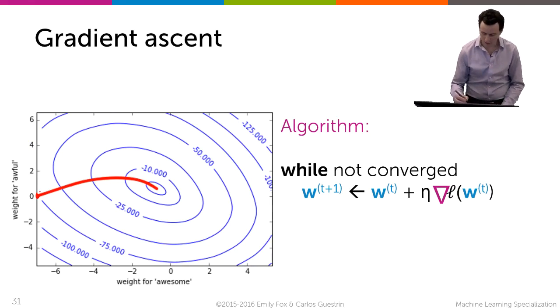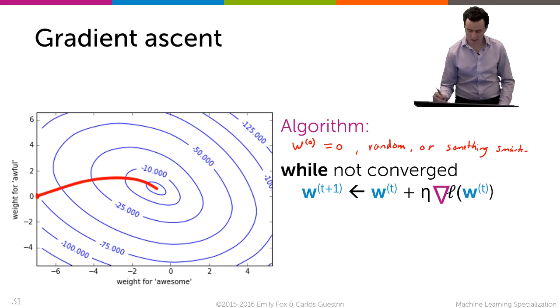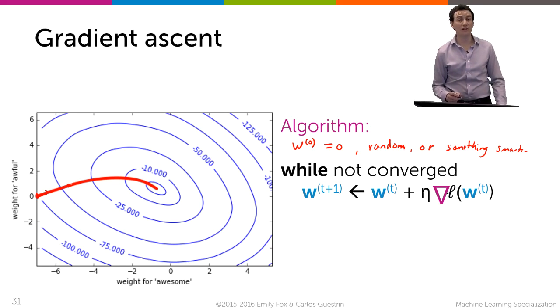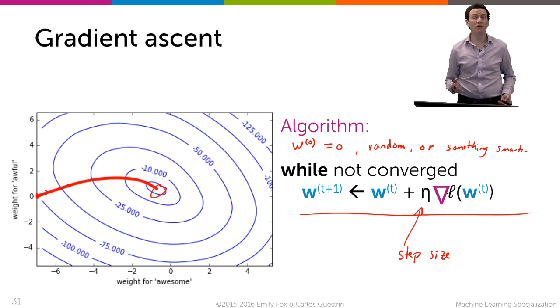You start from some point w^0. And so you might say w is equal to zero or random parameters or something else. And you just keep following the gradient until the magnitude of the gradient is sufficiently small. So that's our algorithm that's going to take us to the optimum. And it's exemplified over here, and the eta here is our famous step size. Great, so now we're done for a review of gradient ascent.